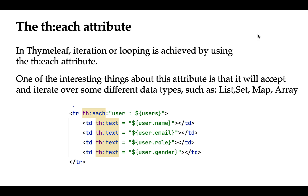One interesting thing about this attribute is that it will accept and iterate over different data types such as List, Set, Map, and Array. It means that we can use the th:each Thymeleaf attribute to iterate over different data types such as a list of elements, set of elements, map of elements, and array of elements.